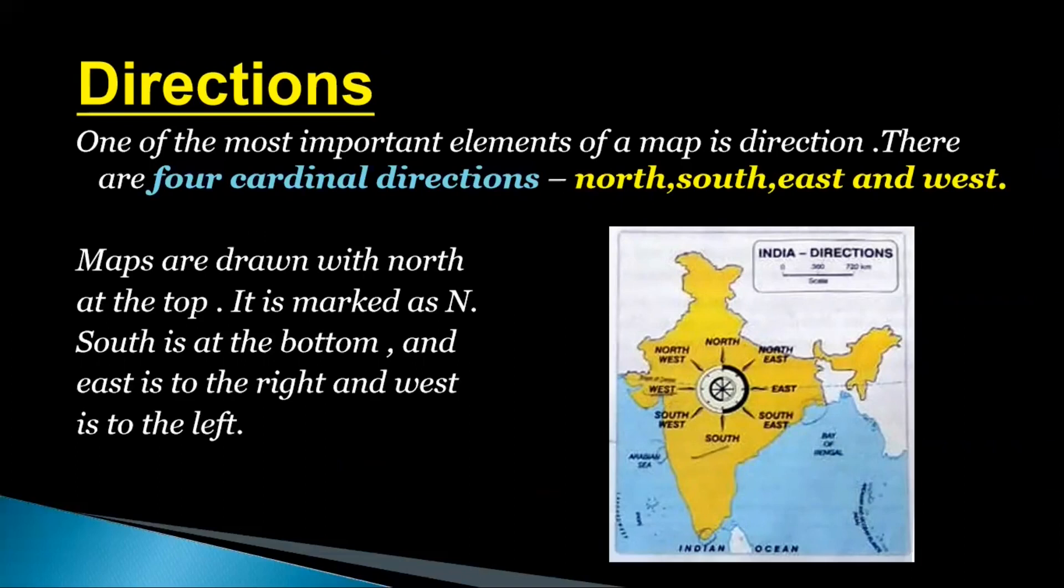Maps are drawn with North at the top. It is marked as N. This is North. South is at the bottom, as you can see in this map, and East is to the right side. This is the East, and West is to the left side.